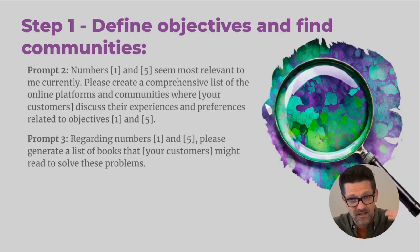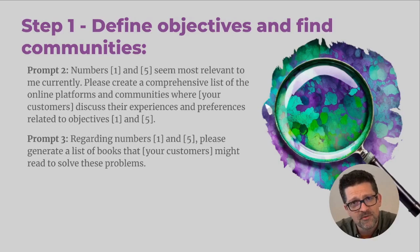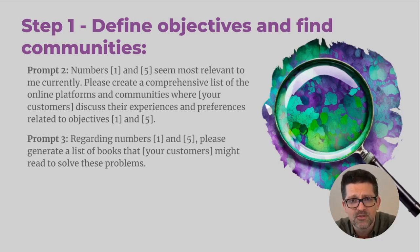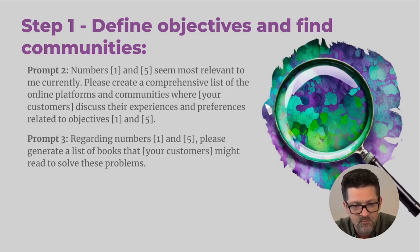From there, ChatGPT is going to generate a bunch of different ideas. Not all of those are going to be related to your service — some are going to be problems they're experiencing that you can't help them with, some are going to be unrelated to your product or service. So you want to hone in on the ones that really are relevant to you. That's where prompt two comes in. You want to say 'numbers one and five seem most relevant to me, so please create a comprehensive list of the online platforms and communities where your customers discuss their experiences and preferences related to objectives one and five.'